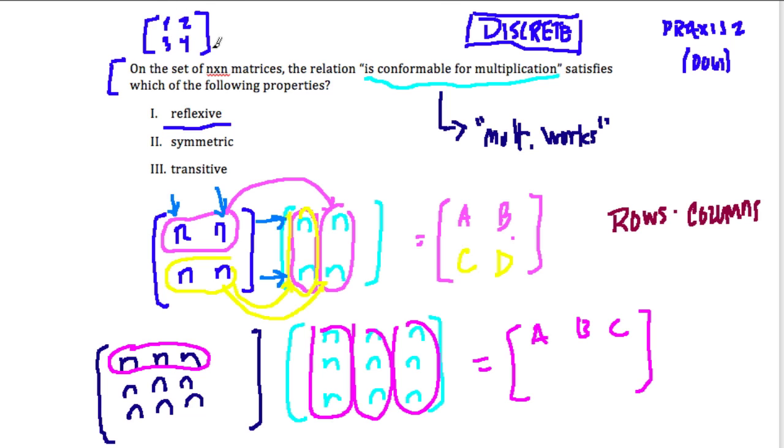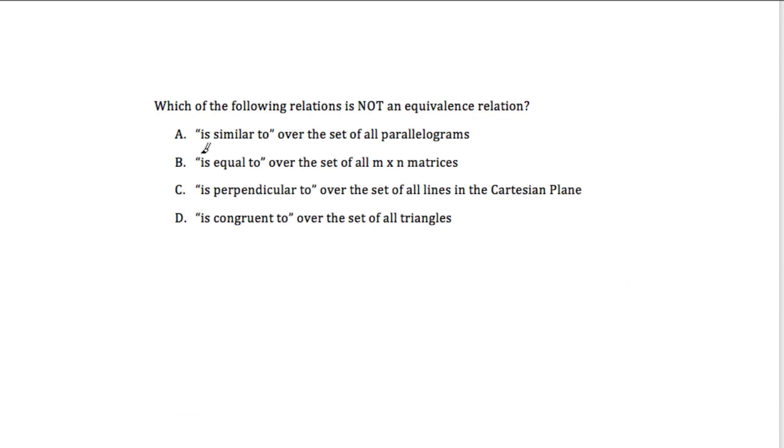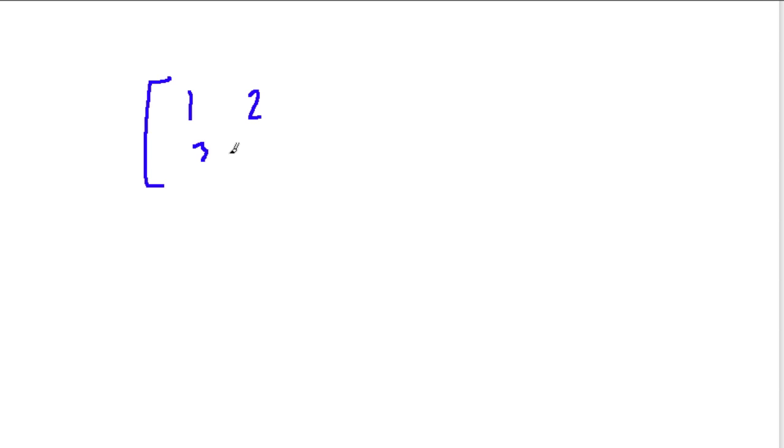So in other words, if we have one n by n matrix, let's label it 1, 2, 3, 4, and we have another one, B, let's say, and it's 5, 6, 7, 8. We know they're both 2 by 2 matrices. Reflexive just means could I take this matrix A and multiply A by itself? Could I do that? The answer is yes. A 2 by 2 matrix is going to be reflexive upon itself, so it is definitely reflexive.